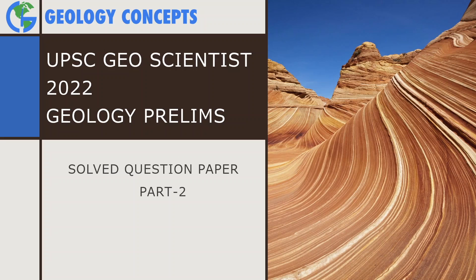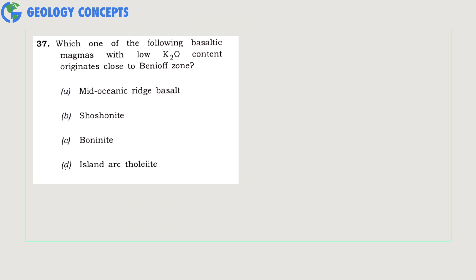So without any further ado, let's get started. The first question is: which one of the following basaltic magma with low K2O content originates close to Benioff zone? The options are mid-oceanic ridge basalt, shoshonite, boninite, and island arc tholeiite.